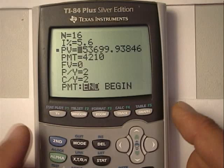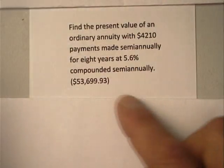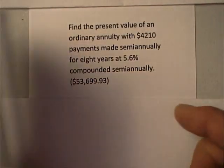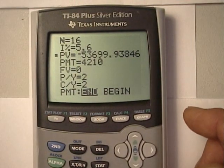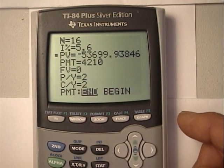I'll do alpha solve, and I get $53,699.93, the present value of that annuity.